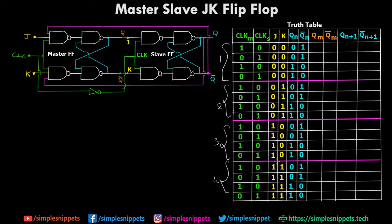We have four different sub-cases within each main case because we are assuming different previous states — we have to assume the current state since we don't know exactly what it is, and the current state is provided as feedback to calculate the next state. We are also assuming the state twice because the clock is changing two times — one going to the master flip-flop and one going to the slave flip-flop. Don't worry about there being many cases; the output is going to be very similar across them.